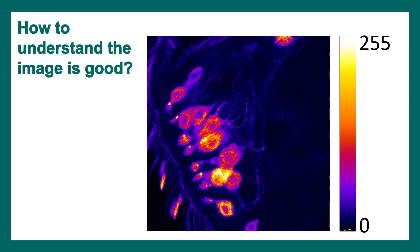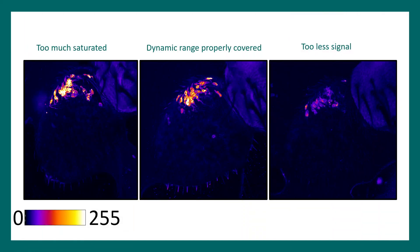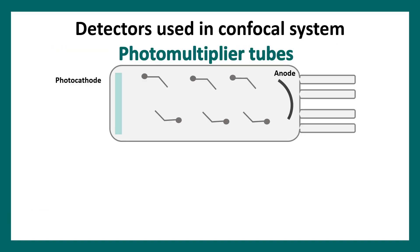Two golden rules for image quality: greater the dynamic range, better the image; and the image should have different gradations of gray values utilizing the whole dynamic range. Comparing the same specimen at different PMT settings: the first image is over-saturated with pixels near 255; the second uses the dynamic range properly; the third is underexposed with very low signal. Too much is not good, too little is not good — you need to hit the sweet spot.